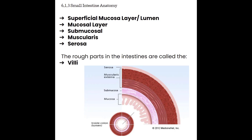Very similar to the stomach, the small intestine also has layers to its wall, except we are adding a fifth layer. Starting from the outside: the serosa, then the muscularis layer, then the submucosa layer, and then the mucosa layer. The fifth layer is what we consider the superficial mucosa layer or the lumen interface. When the bowel is flat against itself, we see an interface where the superficial mucosa layers connect, creating a distinct line through the center of the intestine — this is the five-layer gut sign.